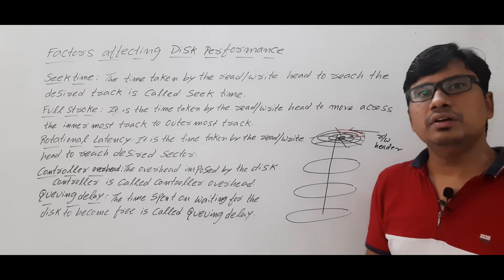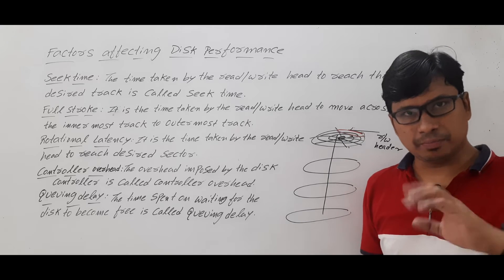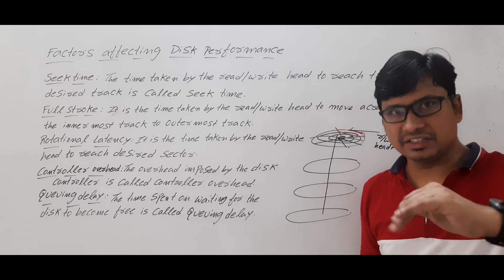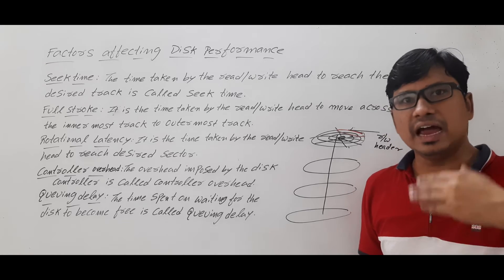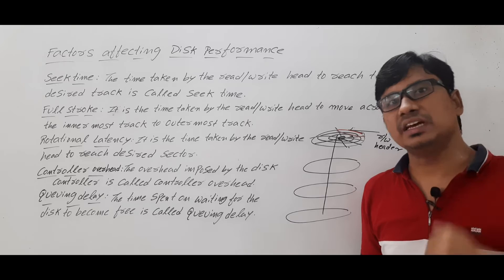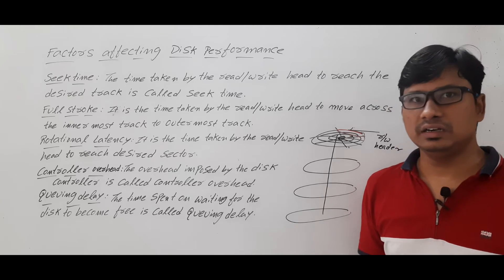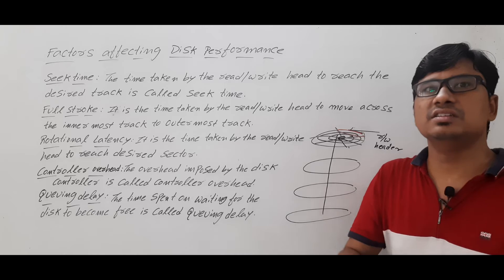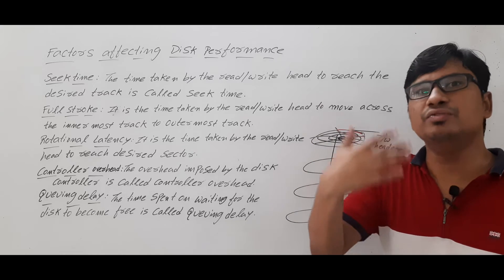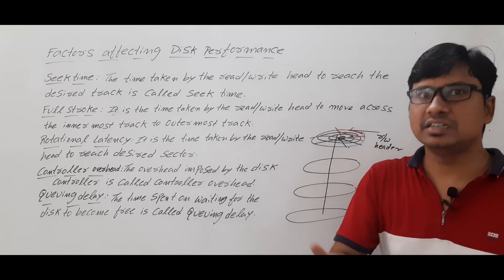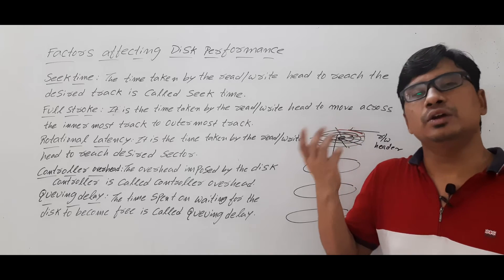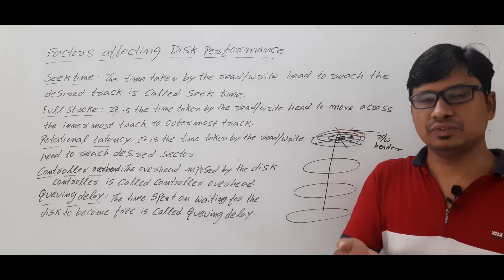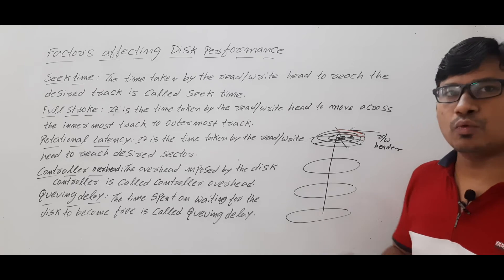To perform a disk access, the disk controller first needs to identify the platter, then the surface, then the track, and then the sector. The disk access time is the summation of seek time, rotational latency, controller overhead, queuing delay, and data transfer — all of which I will discuss one by one.